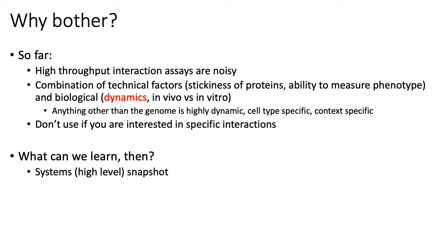A lot of these interactions, especially in PPI networks, are measured in a synthetic environment — you're not measuring PPI interactions in vivo. In humans, for example, you're expressing human proteins in yeast and then measuring whether or not they interact in yeast. So there are a lot of differences between real in vivo conditions and what you're doing in the assay.